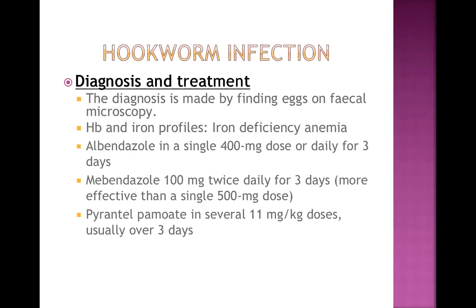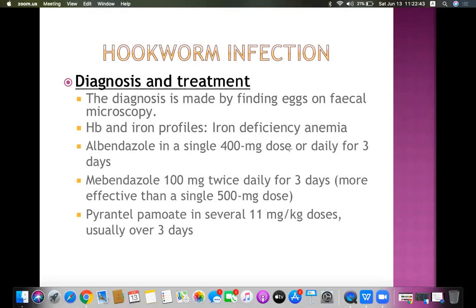Treatment of hookworm infection: antihelminthic drugs are given — albendazole 400 mg single dose, or daily for three days in heavy infection. Mebendazole is given as 100 mg twice daily for three days. Pyrantel pamoate can also be tried at 11 mg per kg dosage, usually over three days. This concludes the discussion on hookworm infection.